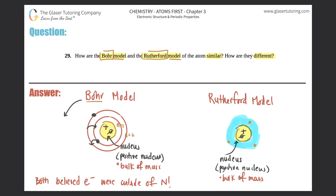Bohr also came up with the quantization rule. He said that the energies of the electrons were quantized — meaning they were discrete numbers — because electrons cannot exist between shells. It has to be n equals 1, n equals 2, n equals 3 — a whole number. You can jump between shells, but you can never be in between. Rutherford basically just said the electrons were outside the nucleus, who knows where.